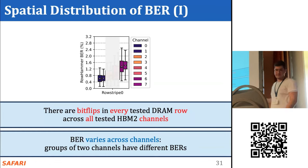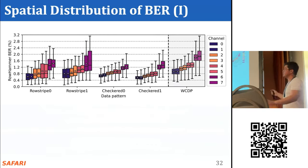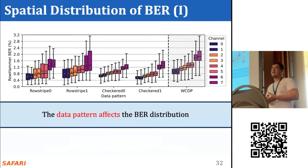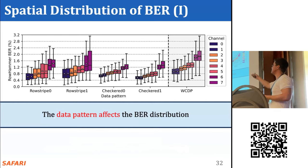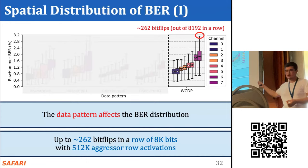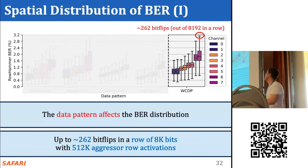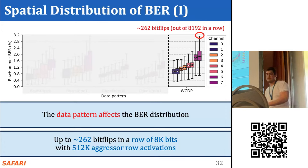In the larger version of the plot, we observe that the data pattern has an effect on the bit error rate distribution, and our observations hold for all data patterns tested. For the worst-case data pattern, we observe up to approximately 262 bit flips in a row of 8,000 cells when using 512,000 activations.